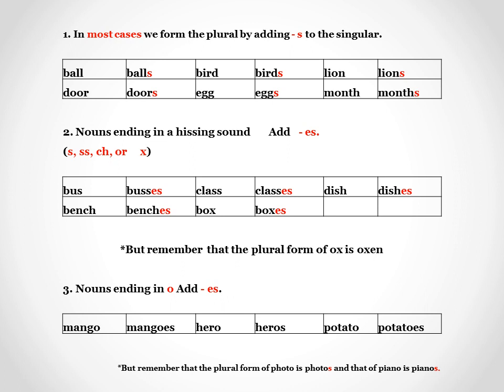That was very simple, right? Now we will move on to the next category: nouns ending in a hissing sound. We add ES at the end. For example, bus becomes buses, class becomes classes, dish becomes dishes. But remember that the plural form of ox is oxen.